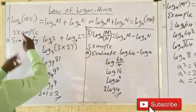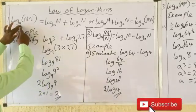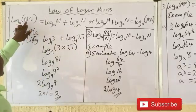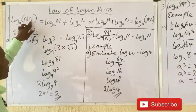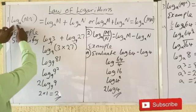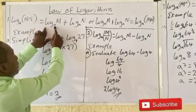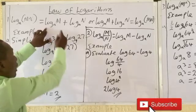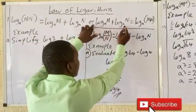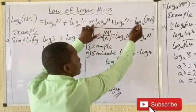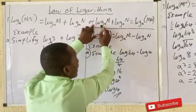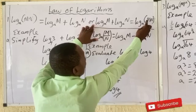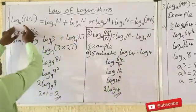The first law: log base a of (m times n) is equal to log base a of m plus log base a of n. Since both terms have the same base, you can combine them into a single log with m times n inside. This form and that form are equivalent.